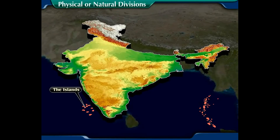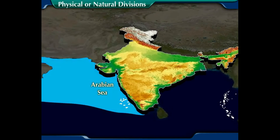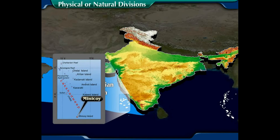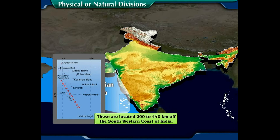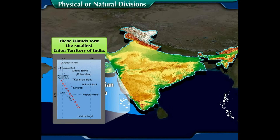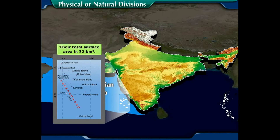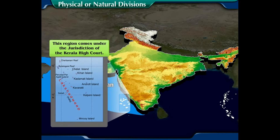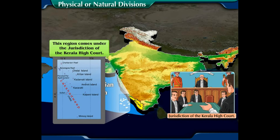The islands: There are two groups of islands. Number one, the Arabian Sea Islands consist of Lakshadweep, Minicoy, and Amindivi islands. These are located 200 to 440 kilometers off the southwestern coast of India and form the smallest union territory of India, with a total surface area of 32 square kilometers. Kavaratti serves as the capital of this union territory, which comes under the jurisdiction of the Kerala High Court.